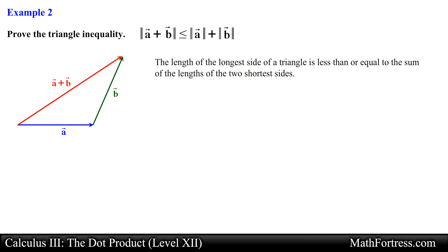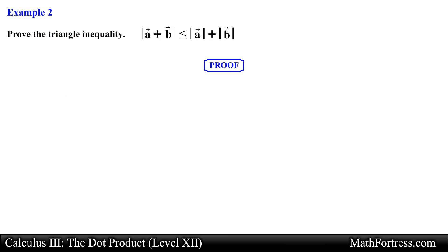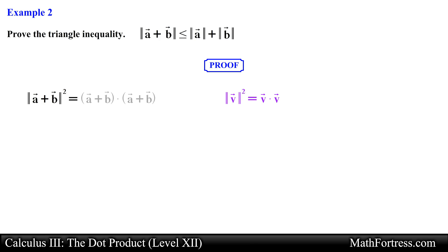The triangle inequality states that the length of the longest side of a triangle is less than or equal to the sum of the lengths of the two shortest sides. This is a property that you probably learned in your first geometry class. The only difference is that this inequality is specific to vectors. We will prove this inequality by starting with the square of the left side of the inequality.